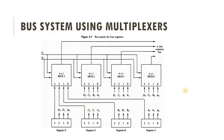In this implementation there are four registers: A, B, C, and D — these are four-bit registers, so each register has four bits: 0, 1, 2, and 3. We are using four multiplexers for this bus system. The number of multiplexers required depends on the number of bits in the register. Here the number of bits is four, so we use four multiplexers. If the register has eight bits, we would require eight multiplexers.